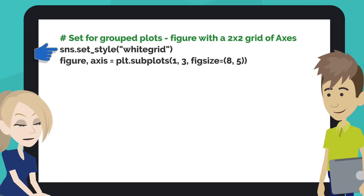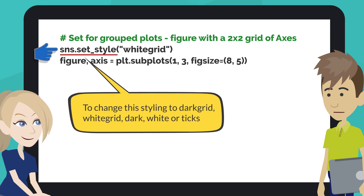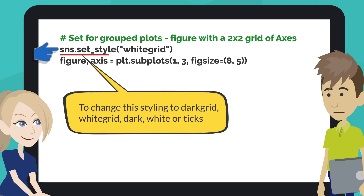This code sets the styling to White Grid for plots. Seaborn defaults to using the Dark Grid theme for its plots, but the SetStyle function of the Seaborn library can change this styling to Dark Grid, White Grid, Dark, White, or Tix.